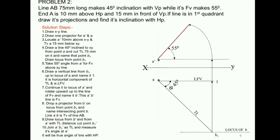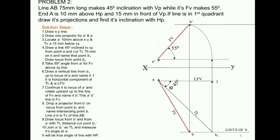We intersect the arc at 55 degrees and stop at B'. After B', we locate B by drawing a vertical line from B'. Then we have the top-view length. We have finished the second part — drawing its projection and finding the right-view angle, which is the inclination with HP.